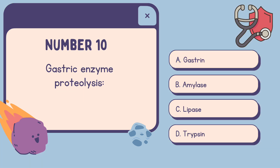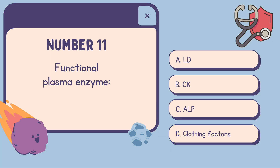Number 10: Gastric enzyme proteolysis is — A. Gastrin, B. Amylase, C. Lipase, D. Trypsin. The correct answer is D, Trypsin.